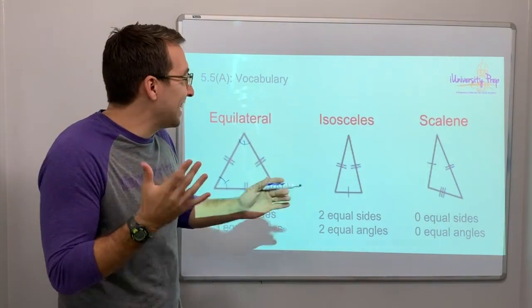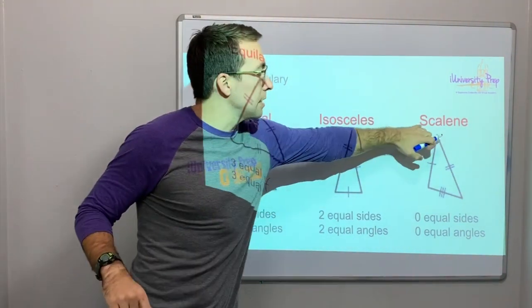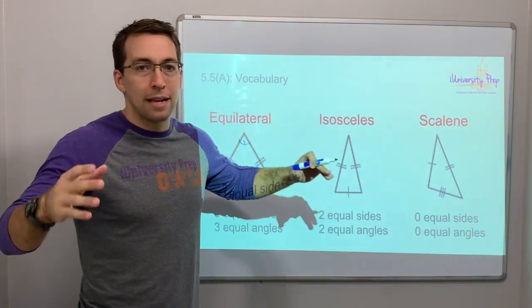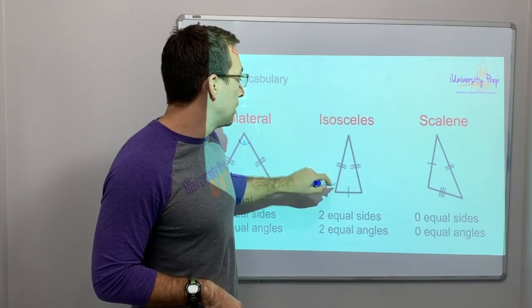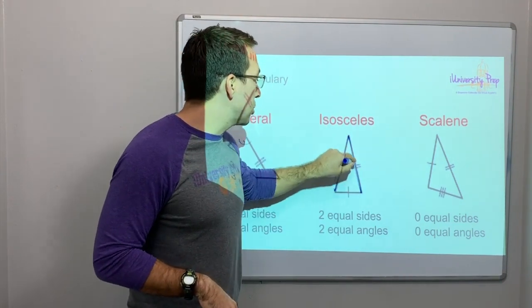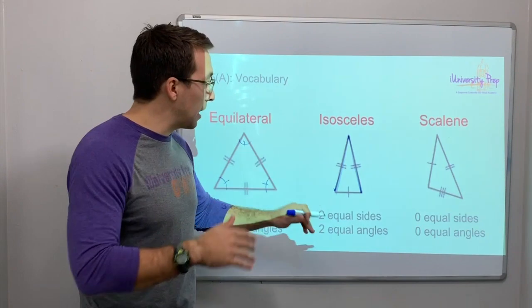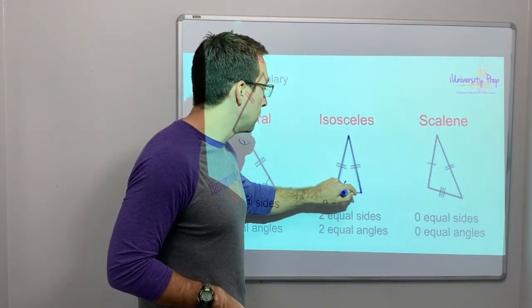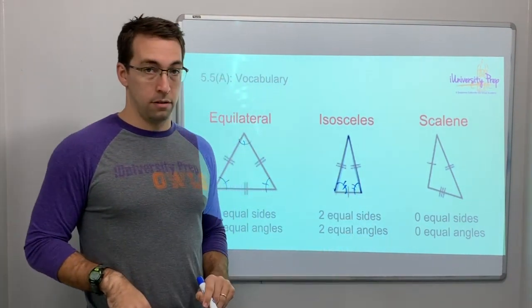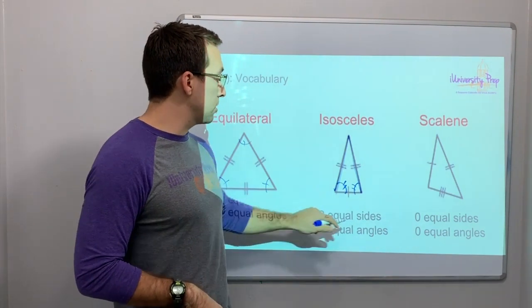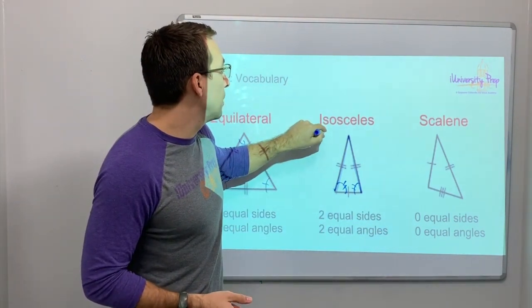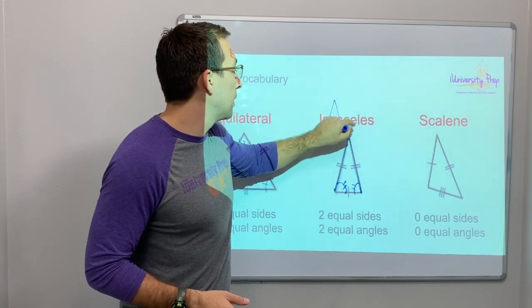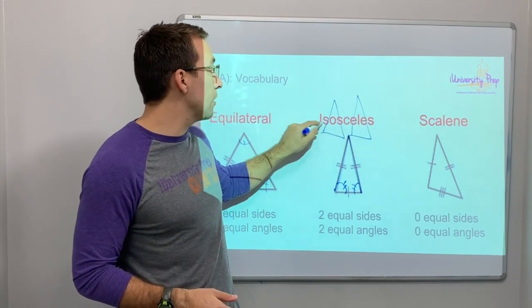Isosceles - it's hard to remember isosceles and scalene. Do your best. I always think about isosceles as the Christmas tree, because these two sides are equal. They're even, and these two angles are even. So it has two equal sides and two equal angles. I think about it as the Christmas tree. This isosceles has two different pairs, S-O-S-E-L-E.